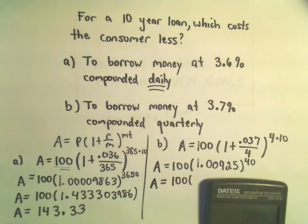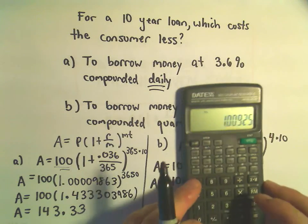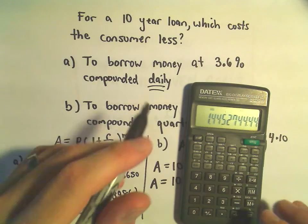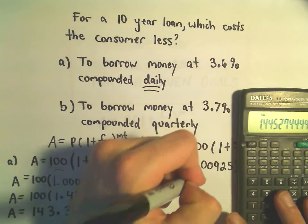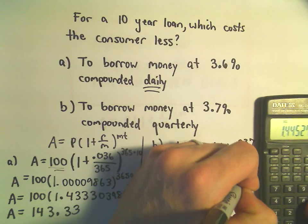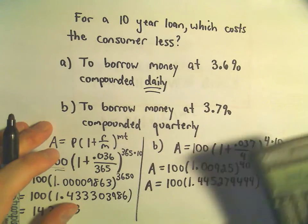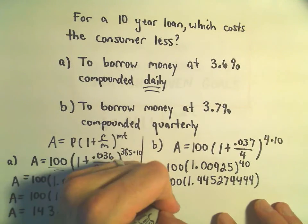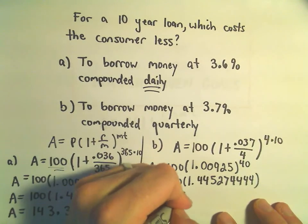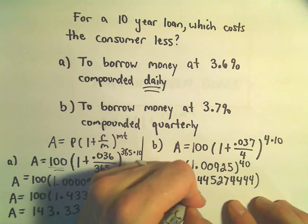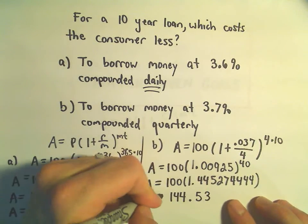So let's see, if I take that and raise that number to the 40th power, I'm getting 1.44527444. So if we multiply that by 100, again, we'll just move the decimal place two places. I'm getting 144.527, so I'm going to round that off to 144.53.